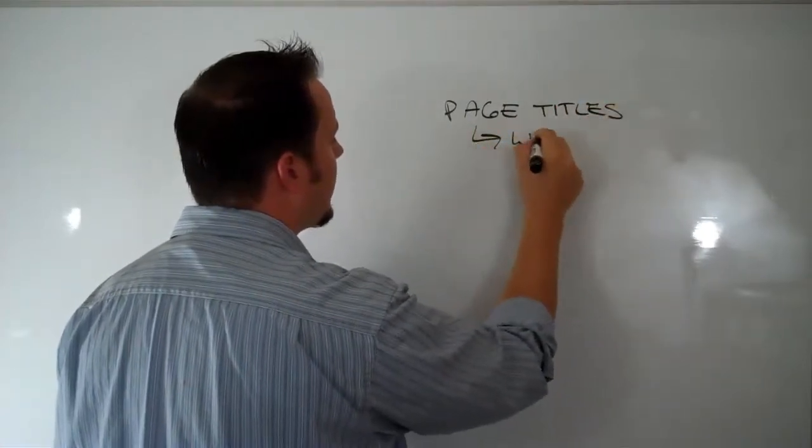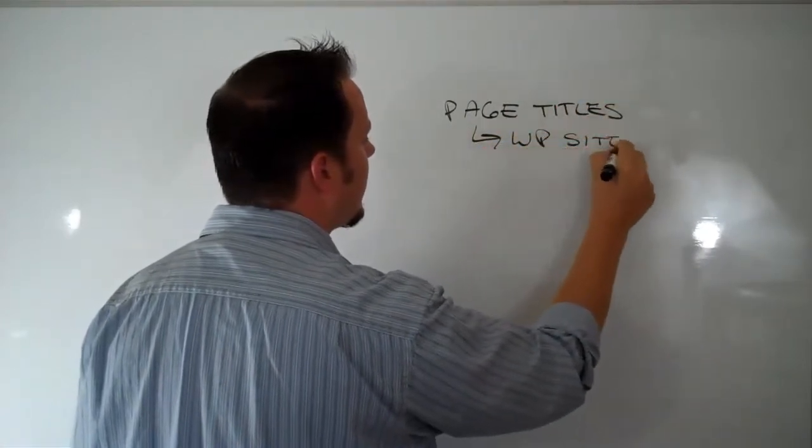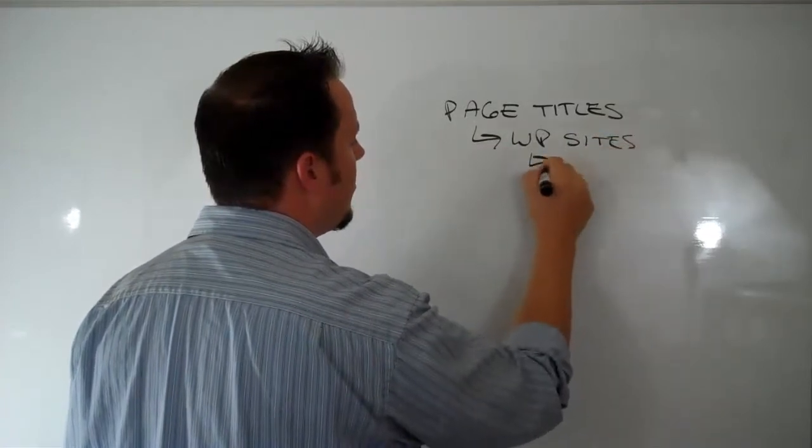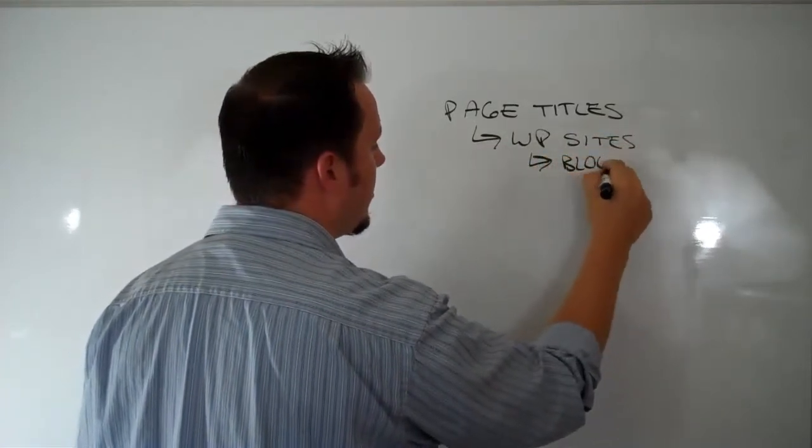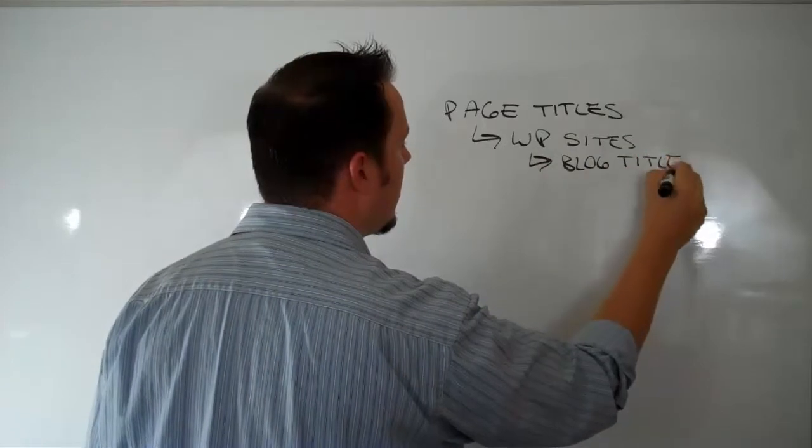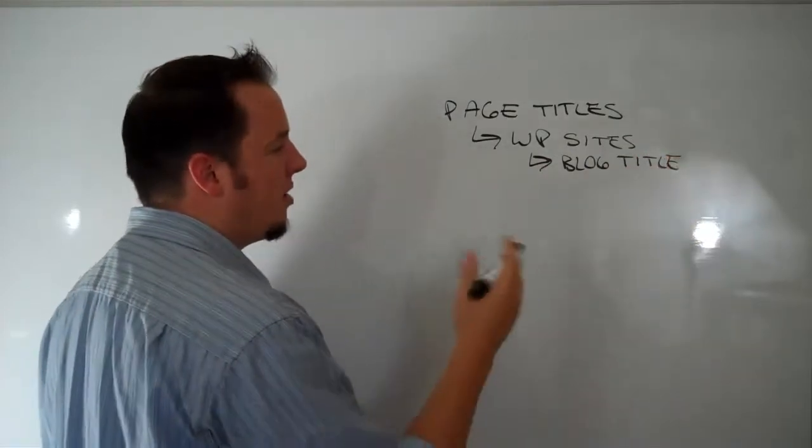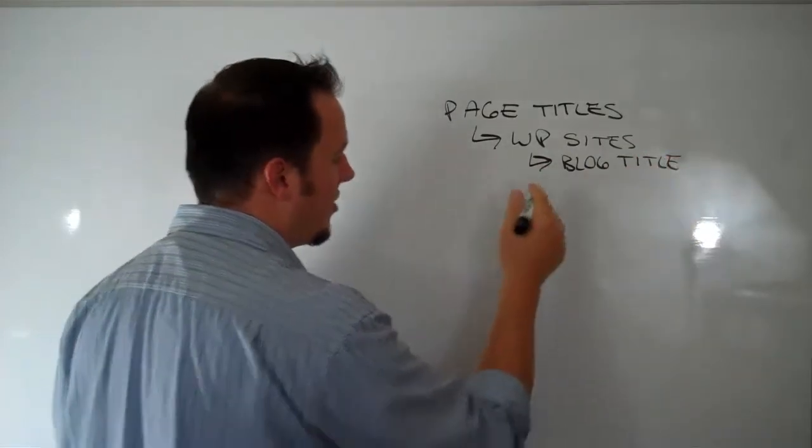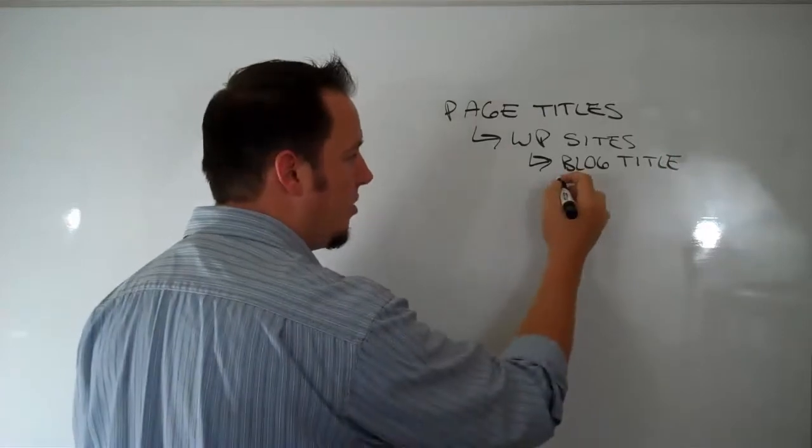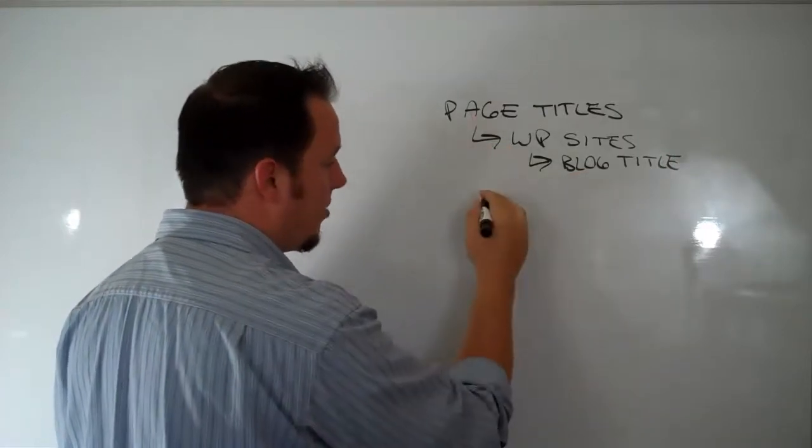A couple areas that you can do some search engine optimization yourself is on page titles. For like WordPress sites, this could be the blog entry title. Alright, so you might want to see, if you're doing a WordPress site, you might want to in your blog title or in your page titles, you're going to throw in your keyword.